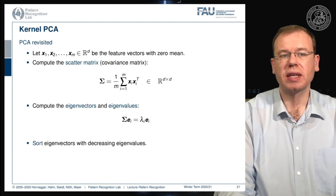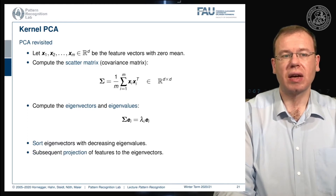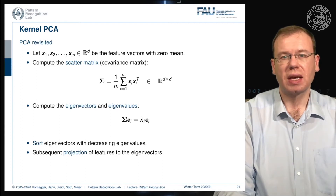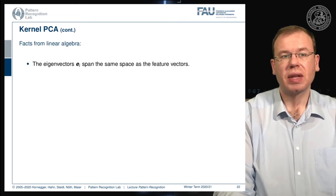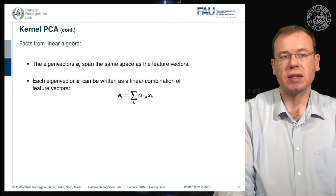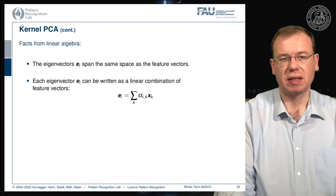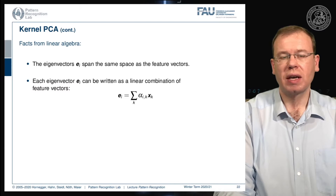We sort the eigenvectors with decreasing eigenvalues and this allows us to use them to project the features. Now let's look into some facts from linear algebra. The eigenvectors span the same space as the feature vectors and the eigenvectors can be written as a linear combination of feature vectors. So our e_i can be expressed as a linear combination given some alpha and the respective observations x.